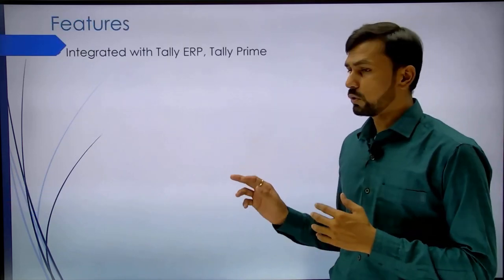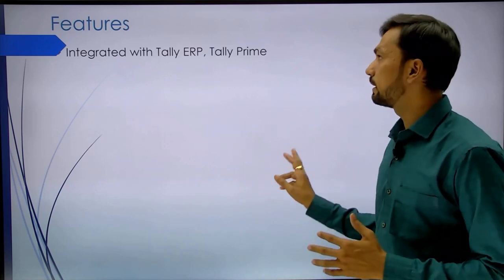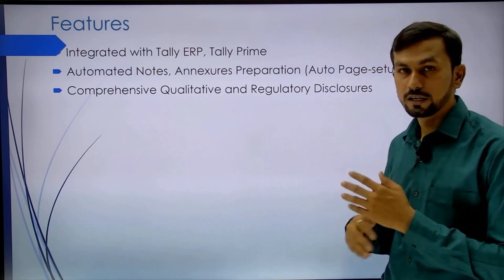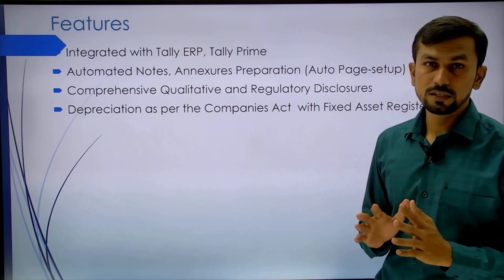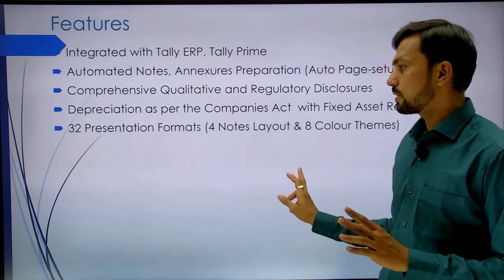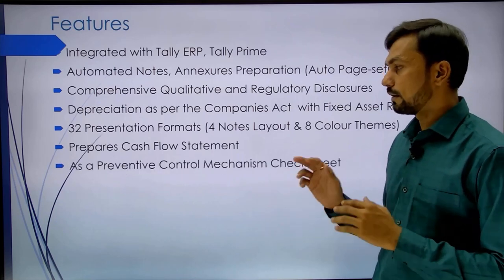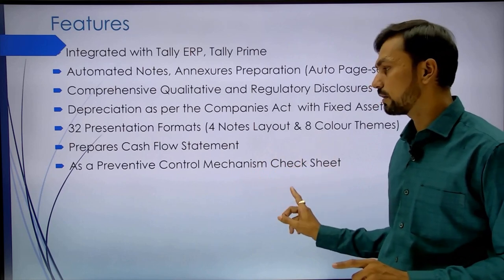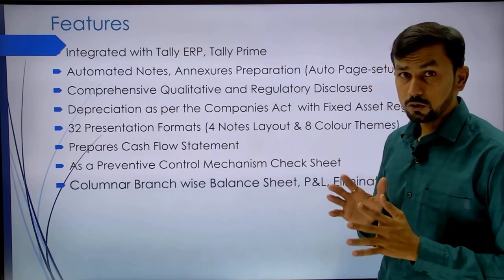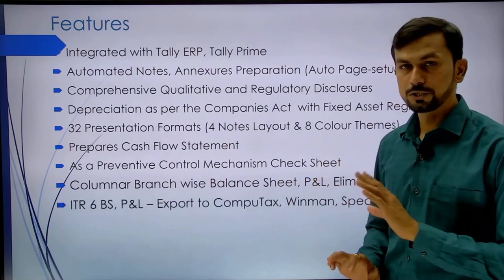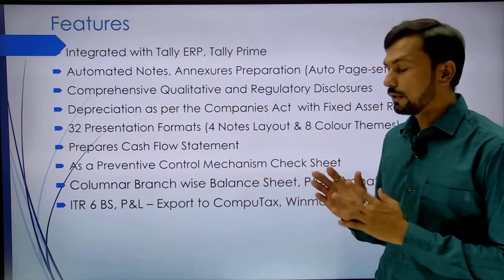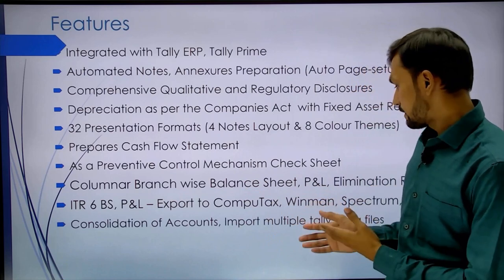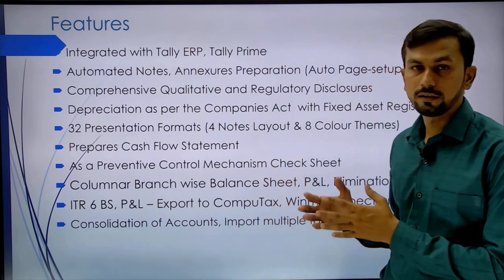In terms of features, the tool is integrated with Tally and Tally Prime, and you can also import data from an Excel TB. All schedules, annexures, and notes can be prepared with the click of one button. There is a comprehensive qualitative and regulatory disclosure sheet. Depreciation as per the Companies Act is also calculated. Presentation options, cash flow, and a check sheet for preventive control are provided. Consolidation can also be done, and you get a columnar balance sheet and P&L for branches. An ITR6 balance sheet and P&L is generated, which can be exported into Winman, Computex, and Spectrum. Consolidation with multiple branches and data from different Tally files is also supported.